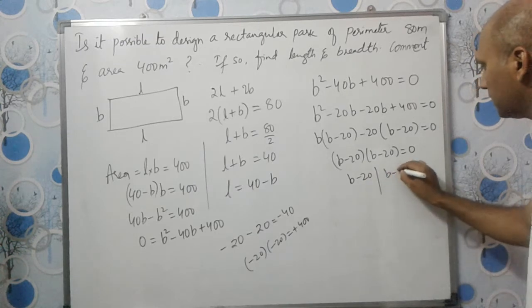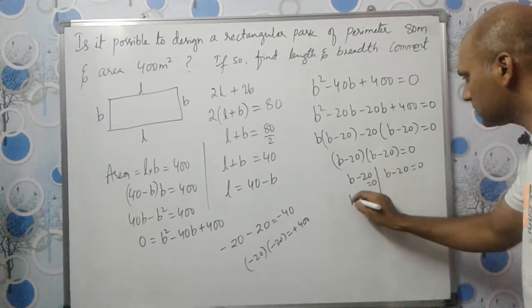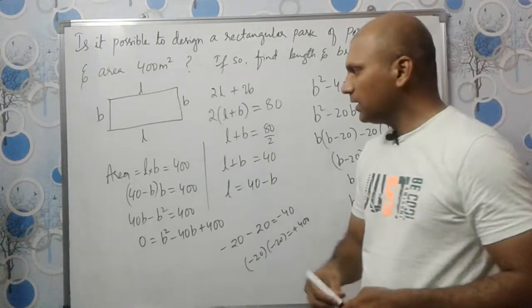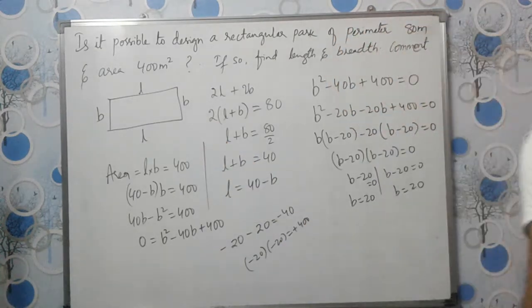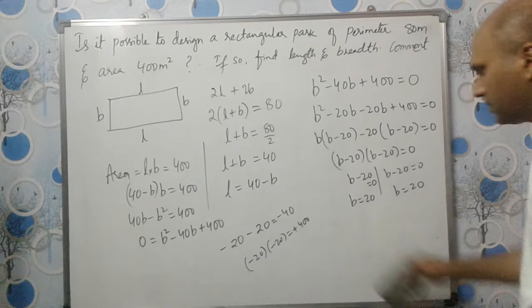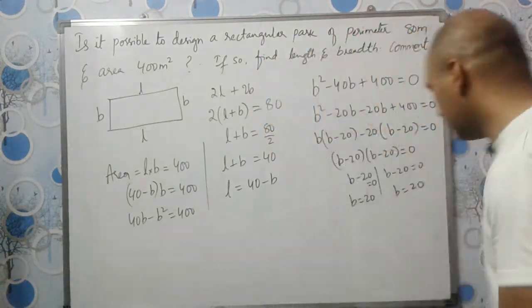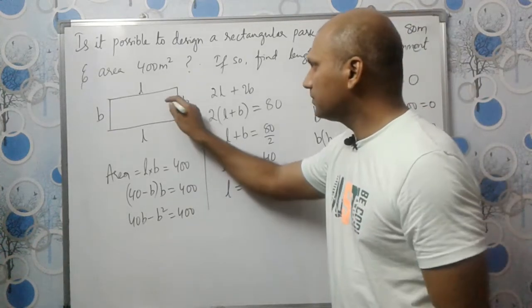Same roots, right? This equals 0, so B-20=0 and B-20=0. Therefore B equals 20. Breadth is 20.